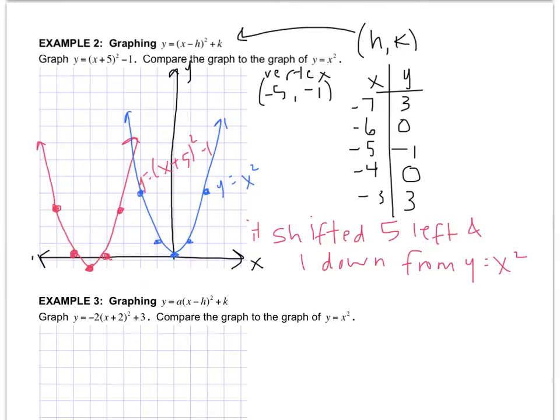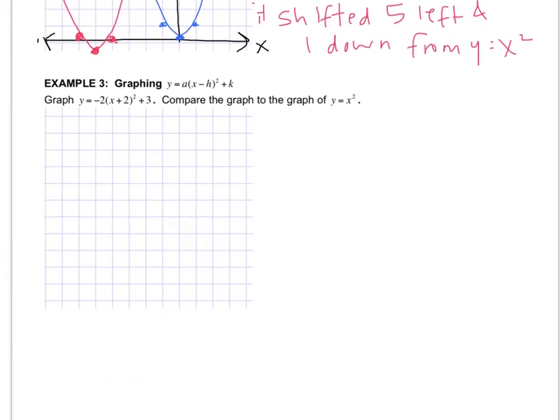All right, last one. We're going to put it all together. We're not just going to move it horizontal. We're not just going to move it vertical. We're also going to do both of those and incorporate a shifting in how wide it is. But the setup is still the same. So the vertex, since it's (h, k) from this formula, the vertex is still at (-2, 3) based on that graph. It's just a question of how wide or narrow it is.